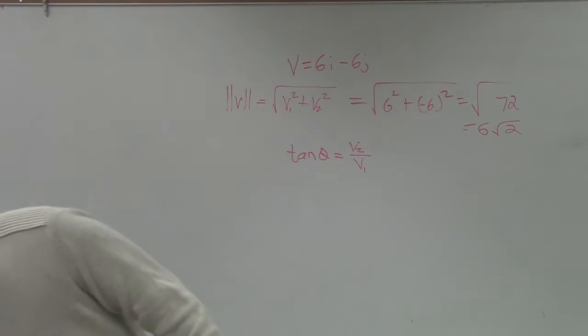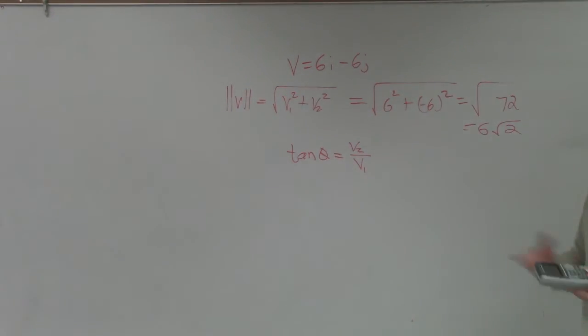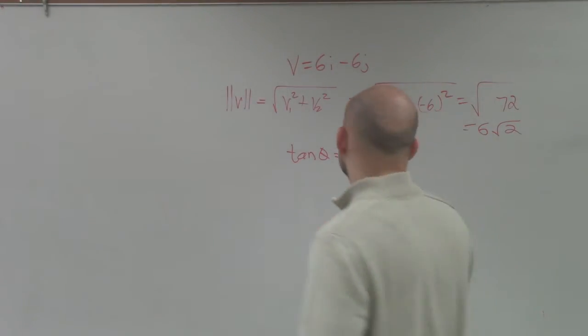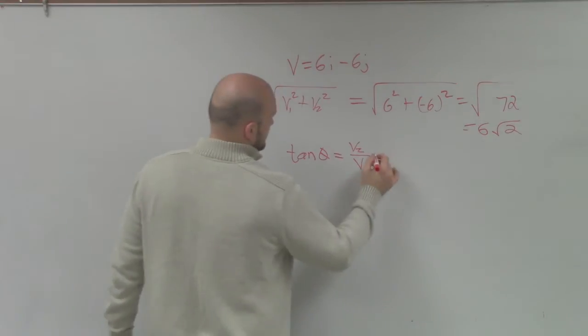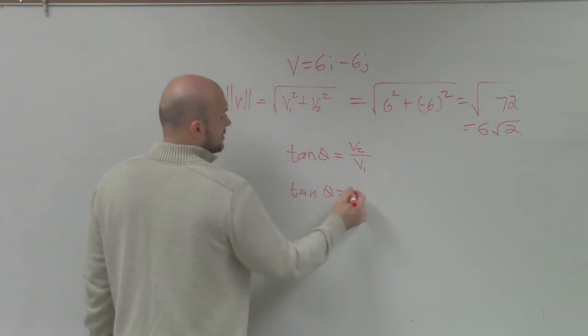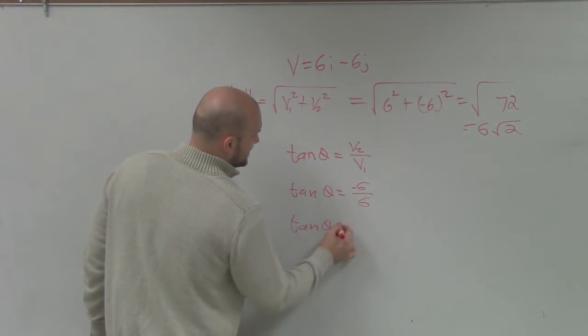I'm going to borrow Ava's calculator. I'm going to take the tangent. So this is tangent of theta equals negative 6 over 6, so tangent of theta equals negative 1.